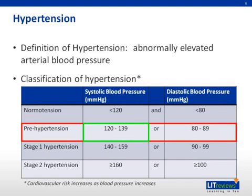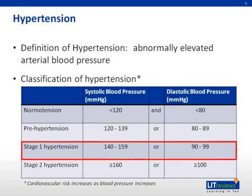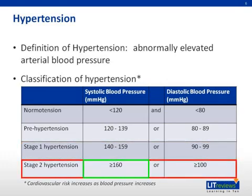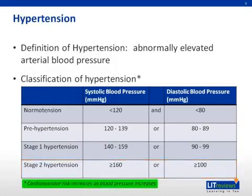Prehypertension: systolic blood pressure between 120 and 139, or a diastolic blood pressure between 80 and 89. Stage I Hypertension: a systolic blood pressure between 140 and 159, or a diastolic blood pressure between 90 and 99. Stage II Hypertension: a systolic blood pressure equal to or greater than 160, or a diastolic blood pressure equal to or greater than 100. Cardiovascular risk increases as blood pressure increases.